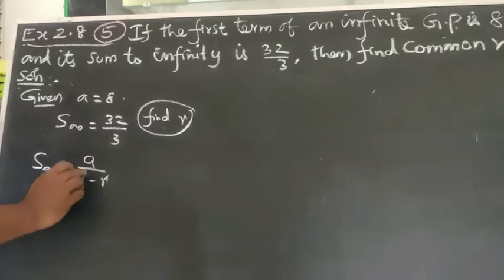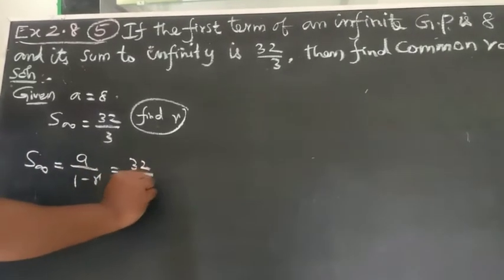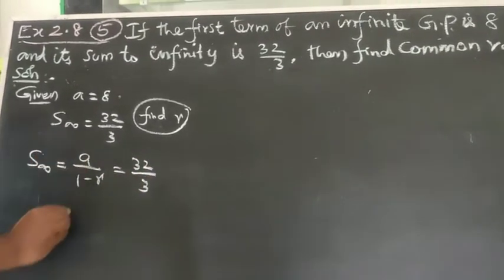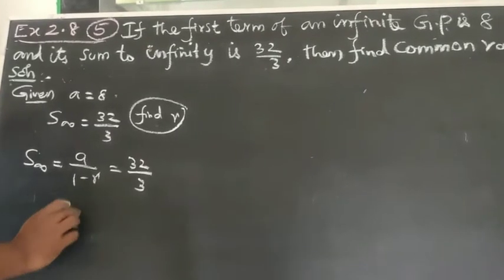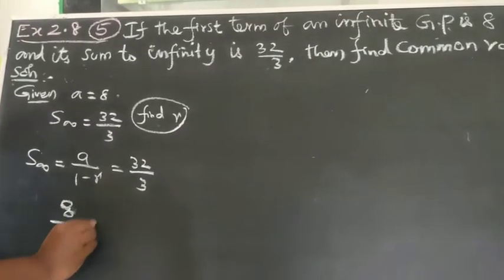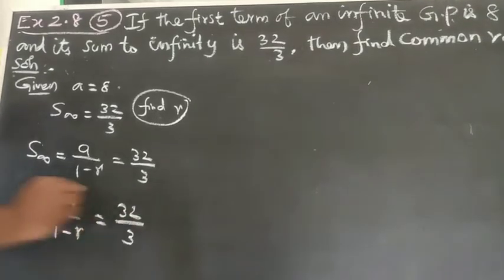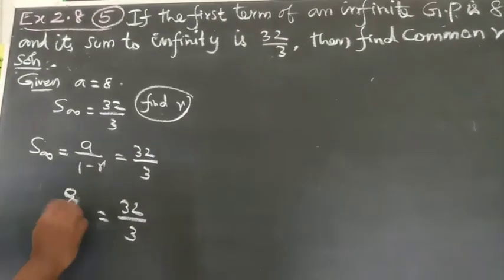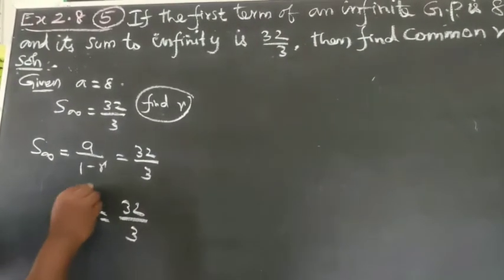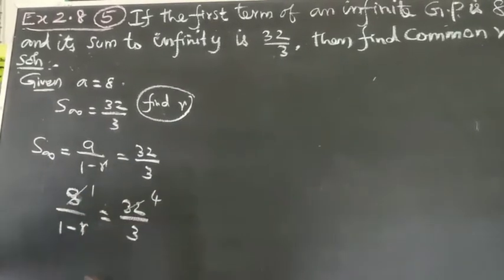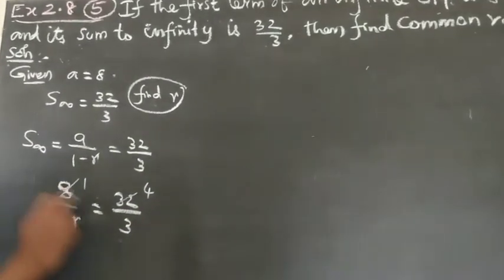Therefore, substituting the values: 32/3 = 8/(1-r). 8 cancels. 8 into 4, 8 into 32. Cross multiply.